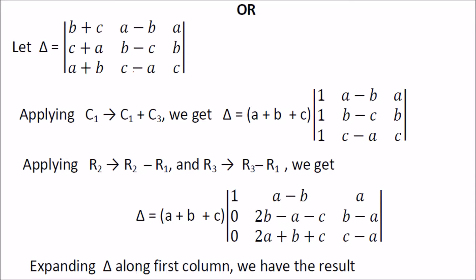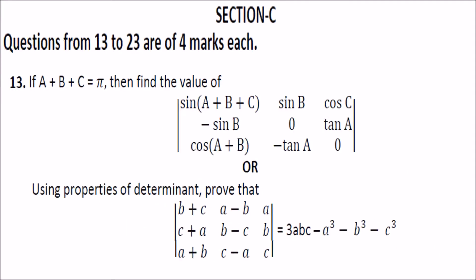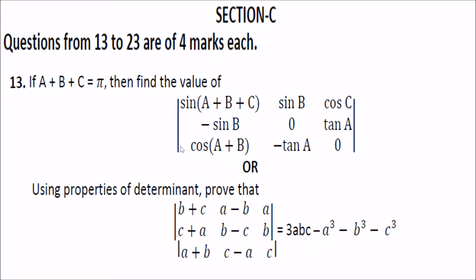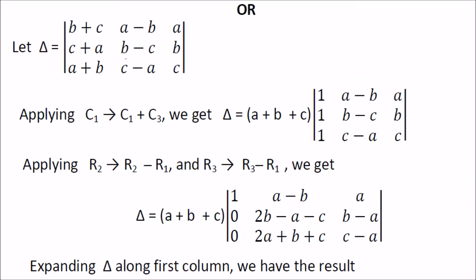The next problem: you have to show that this determinant is equal to a given expression. First, if we add one column to another, we get a plus b plus c, and we can take a plus b plus c outside. So in column 1, replace it with column 1 plus column 3. You get a plus b plus c out, with 1, 1, 1 in that column.